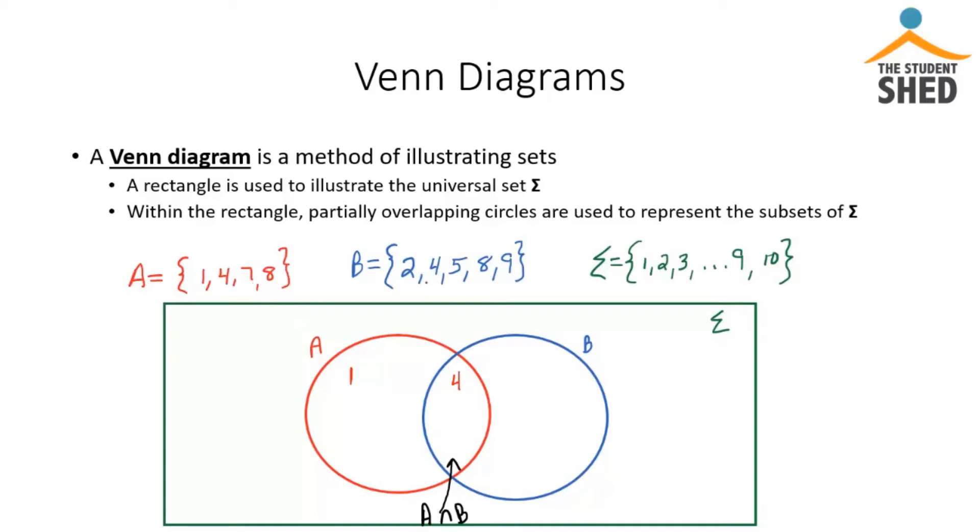7 is in set A but not B. So that's going to stay over here where it's just only in the space for A. And 8 is in set A and also in set B. So that's going to go in the middle because A and B both share 8 as an element.